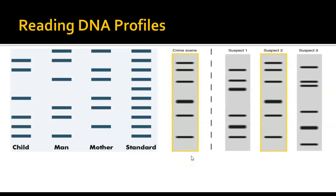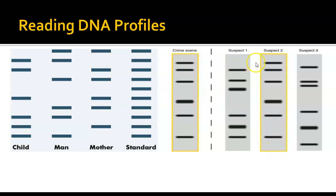Here are a couple of DNA profiles to review. In a paternity example: we verify the woman is the mother and determine if the man could be the father. Looking at each band from the child — this band matches the father, this one the mother, this one the mother, this one the father, and so on — every band of the child's pattern matches either one from the father or one from the mother, even though both parents have additional bands not present in the child. In a crime scene, you'd look for an exact match if the suspect left that DNA there, but again, that may not prove guilt — it may just prove they left their DNA at the scene.